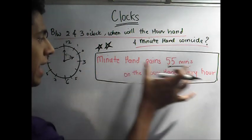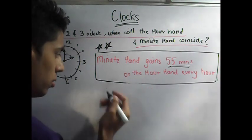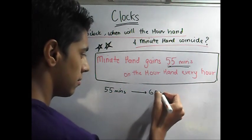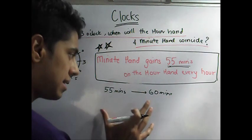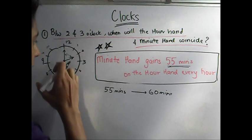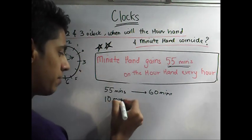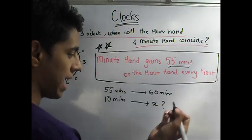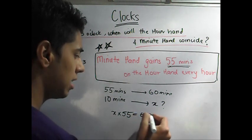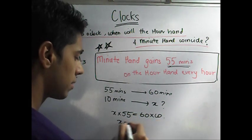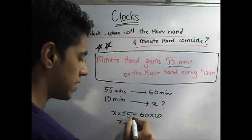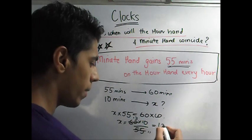We already know that the minute hand gains 55 minutes on the hour hand every hour — it gains 55 minutes every 60 minutes. This looks confusing because there's time on both sides. Understand this: one is the real time and the other is the time it gains. We want it to gain 10 minutes. To find how much time that takes, we use cross multiplication: x × 55 = 60 × 10, so x = (60 × 10) / 55, which comes out to 120/11.